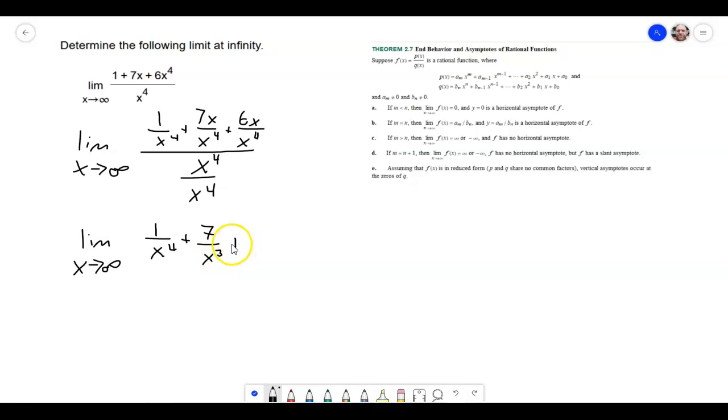And then we're going to plus, this will be, is that supposed to be a 6x, oops, I forgot to write the fourth up there. So that's just going to be plus 6 all over 1.